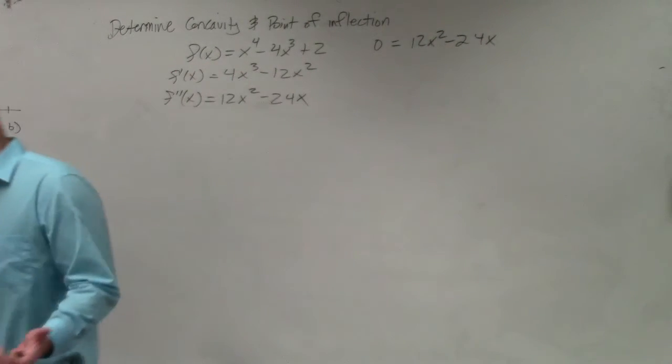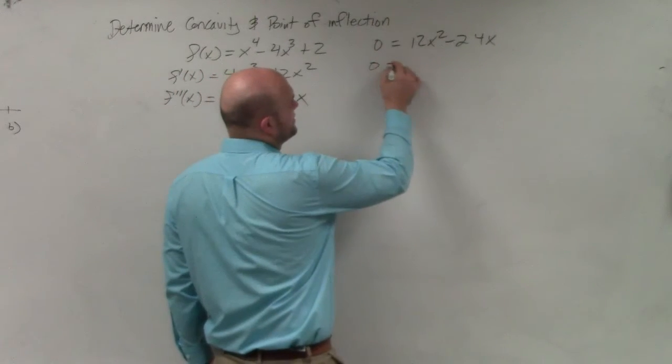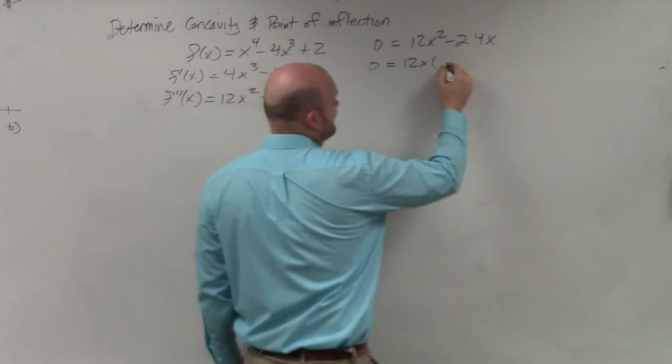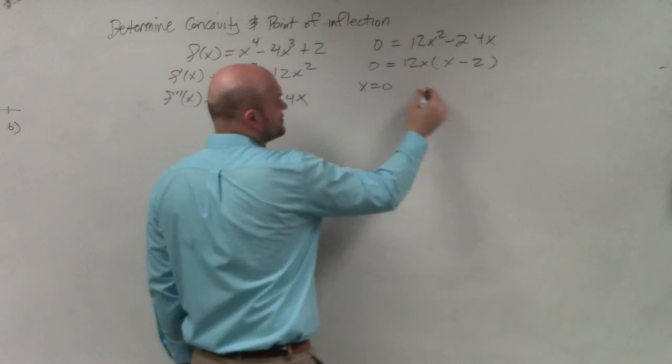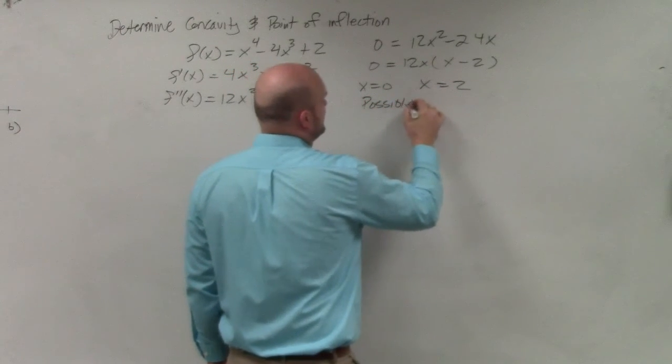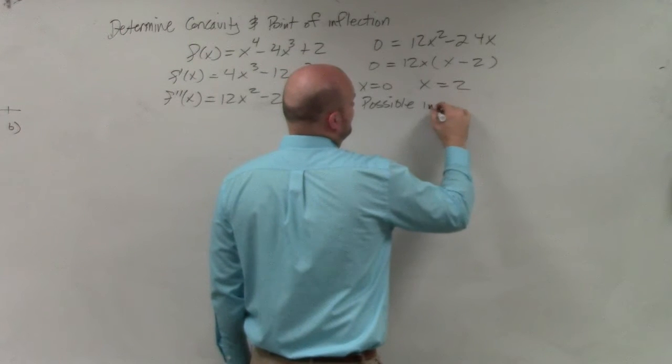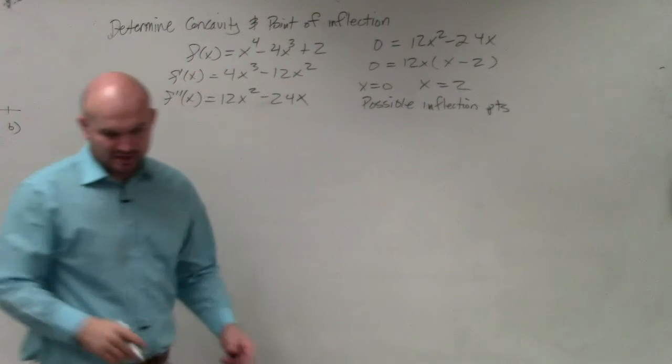And now what we need to do is obviously solve for x. So we're going to use some factoring techniques. I can factor out a 12x. If I factor out a 12x, I get x minus 2. So therefore I can say x equals 0 and x equals 2 are possible inflection points, or possible points of inflection.